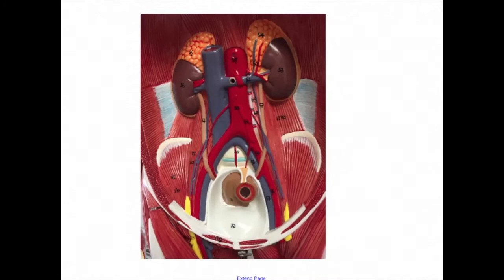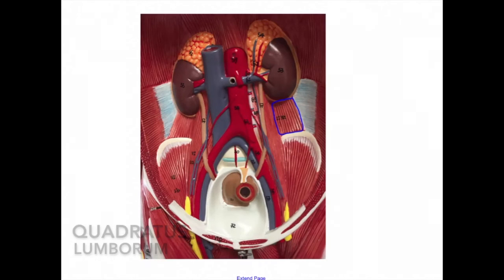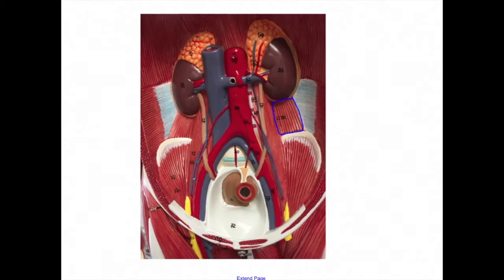Here we see the pelvic muscles. Quadratus lumborum is located here. The origin is the iliolumbar ligament and the iliac crest. The insertion is the last rib and the transverse processes of the lower four lumbar vertebrae. The action is to aid in extending the trunk.